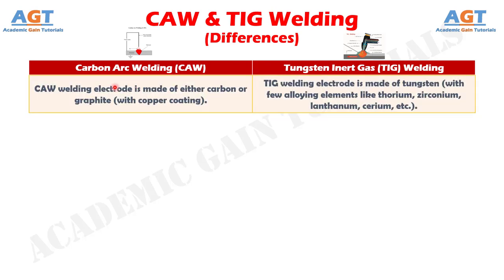Difference number 1: the carbon arc welding electrode is made of either carbon or graphite with copper coating, whereas the TIG welding electrode is made of tungsten with few alloying elements like thorium, zirconium, lanthanum, cerium, etc.